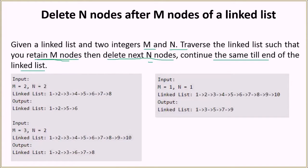Let's see it with an example. Given this linked list, m is equal to 2 and n is also equal to 2. So we retain the two elements here, then we delete 3 and 4. Then we retain these two elements here, then we delete these two elements. So we have 1, 2, 5, and 6.